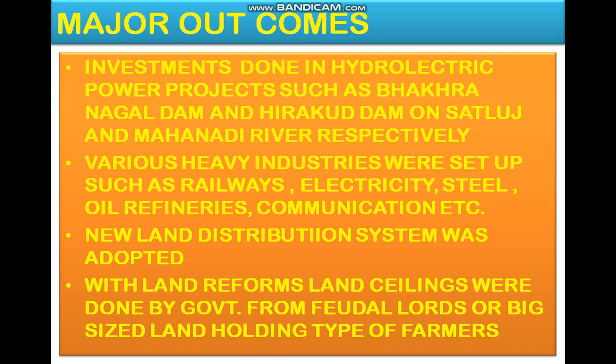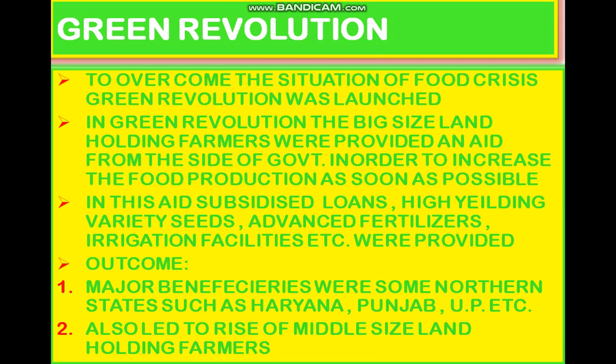Moving on, we come to the topic of the Green Revolution. The Green Revolution was a proposed and organized plan launched to overcome the situation of food crisis. In the Green Revolution, big-size landholding farmers were provided aid from the government in order to increase food production as soon as possible. This aid included subsidized loans, HYV seeds, advanced fertilizers, and irrigation facilities.